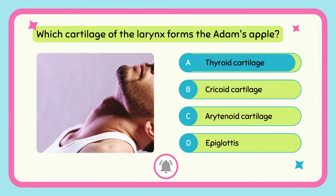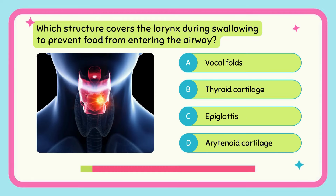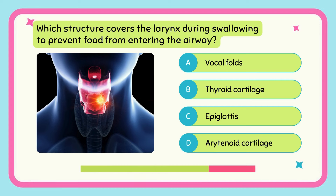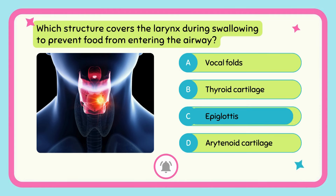Thyroid cartilage. Which structure covers the larynx during swallowing to prevent food from entering the airway? Epiglottis.